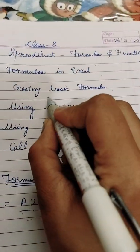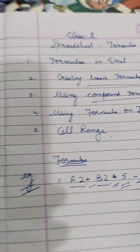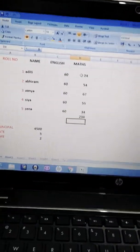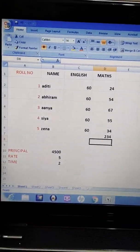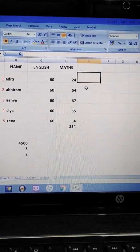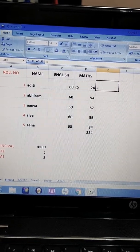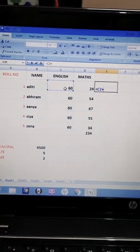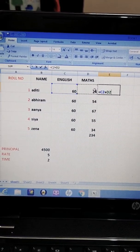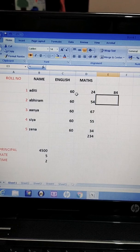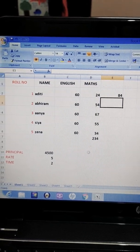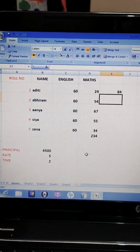Now they are talking about creating basic formula and compound formula. What is the difference between compound formula and basic formula? Like I have to find sum of these two numbers. What will I write? Is equal to this plus this. So sum of English and maths of Aditi is 84. I have used only one operator, that is plus sign.